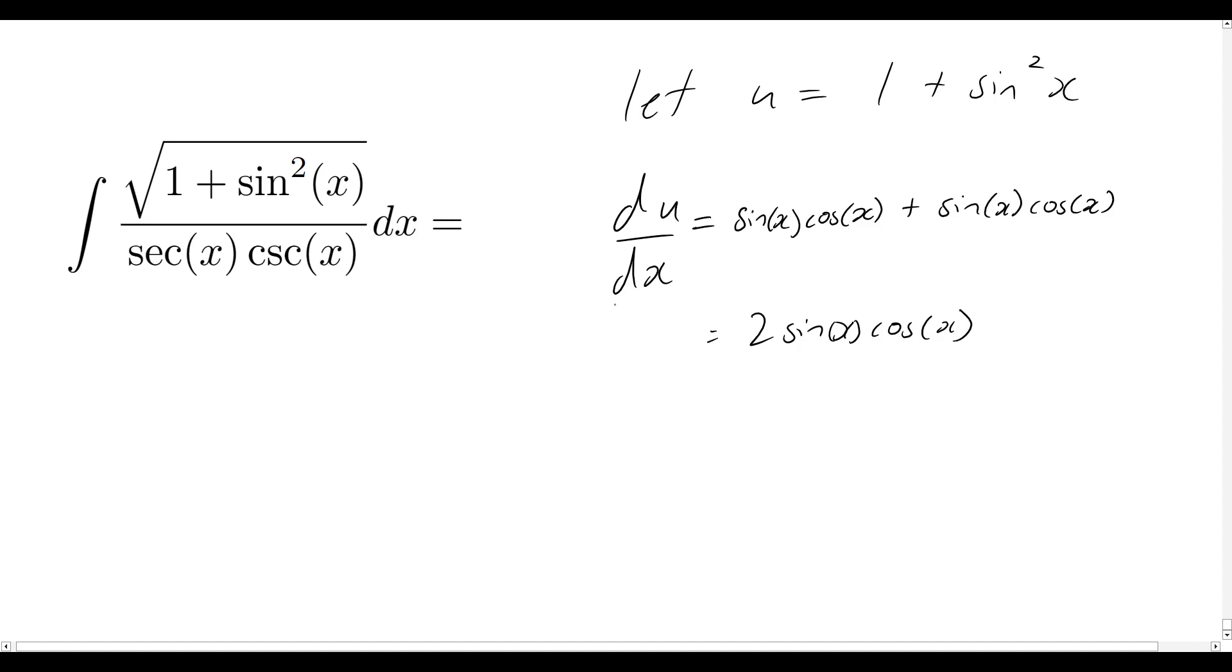Okay, so that's du dx. So what if we just want to replace that dx term there? What I need to do now is just bring that dx up to the other side here and bring that 2 sin x cos x down to the left hand side. So that means we would end up with our du over 2 sin x cos x is equal to dx.